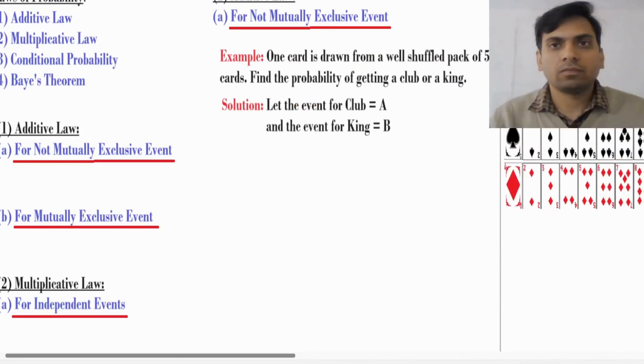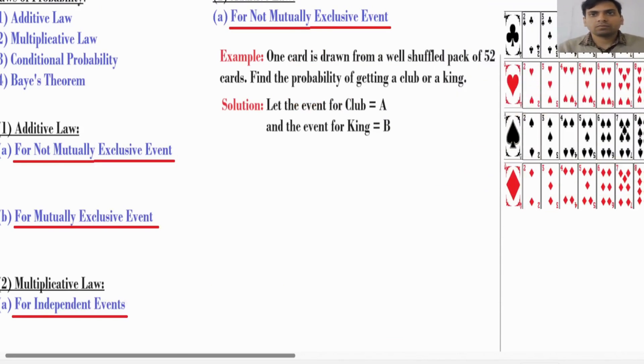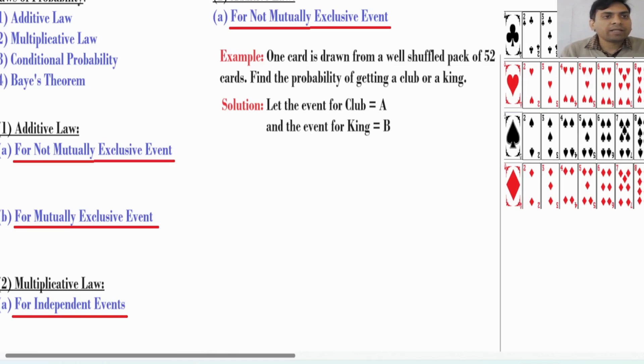In this lecture we will see probability laws, specifically today we will see additive law. In laws of probability there are 4 laws: first is additive law, second is multiplicative law, third is conditional probability, and fourth is Bayes theorem.